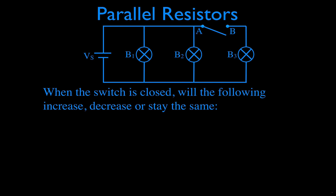We want to know — and this is what we're going to be talking about in the video — when we close this switch, will the following things increase, decrease, or stay the same? We have a circuit with one voltage source, three bulbs all in parallel with each other and with the voltage source, and a switch which goes across points A and B.